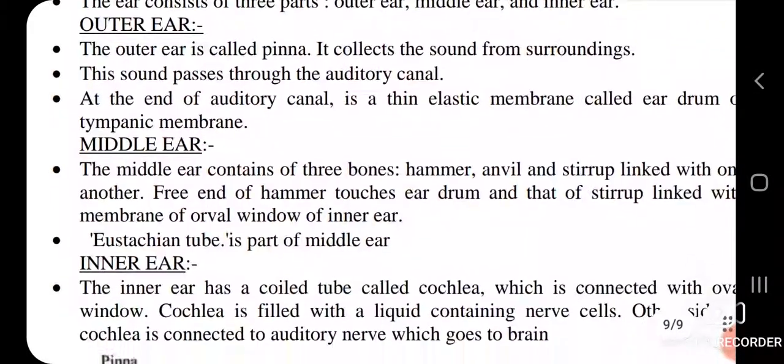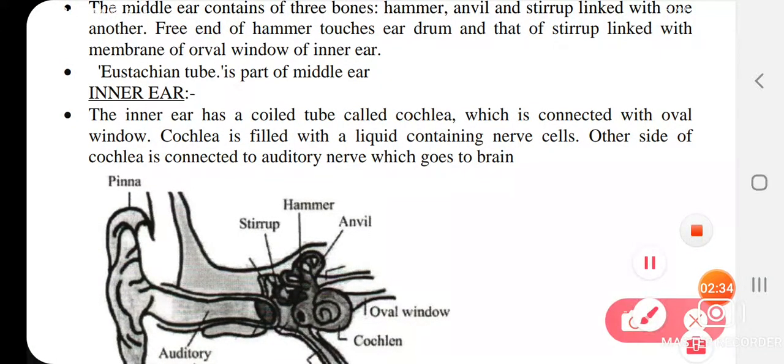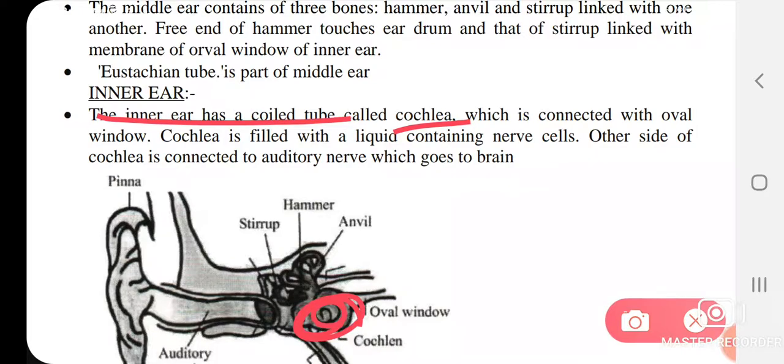Now let's look at the inner ear, which is very important. The inner ear has a coiled tube called cochlea, which is connected with the oval window. Cochlea is filled with a liquid containing nerve cells which goes to the brain.